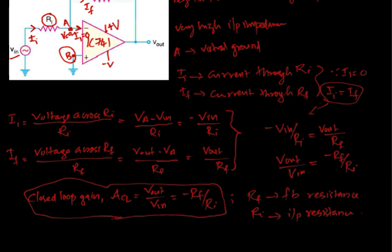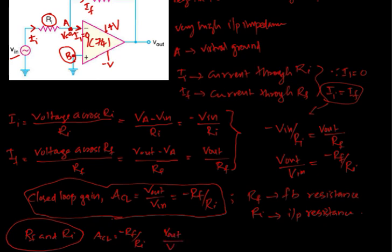For our practical classes, we have to do this experiment where we will design a circuit with particular RF and RI values. Theoretically, we will calculate the closed-loop gain using the equation ACL equals minus RF by RI. Then we will note down the corresponding input and output voltages, and find the ratio Vout by Vin. We will compare the theoretical and experimental values — that is what we will do for practical classes.